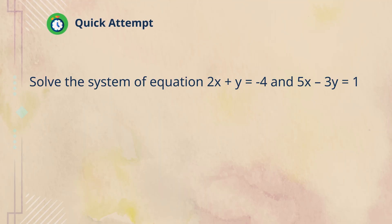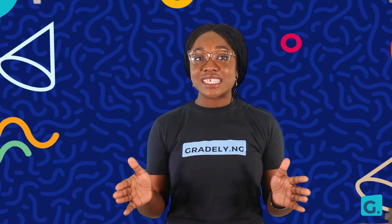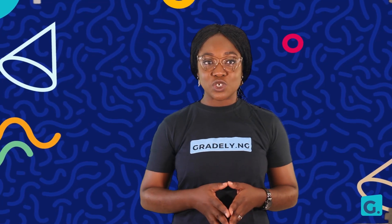Now try this practice. You can pause the video to solve this system of equations: 2x plus y equals minus 4, and 5x minus 3y equals 1. Was your answer x equals minus 1 and y equals minus 2? That is great! You've mastered the skill of solving simultaneous equations using the substitution method.